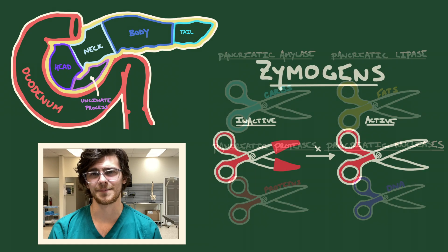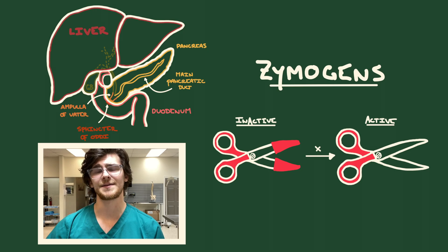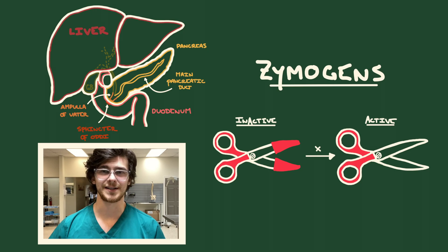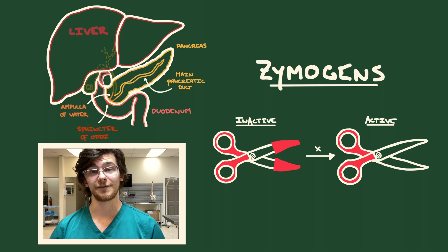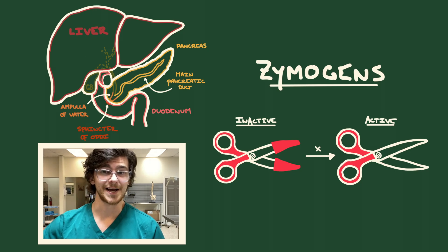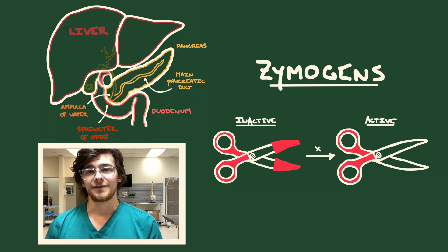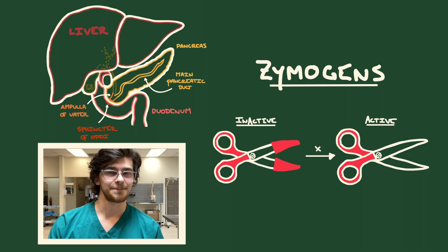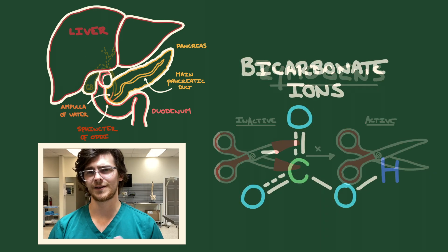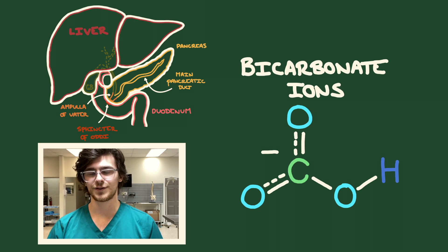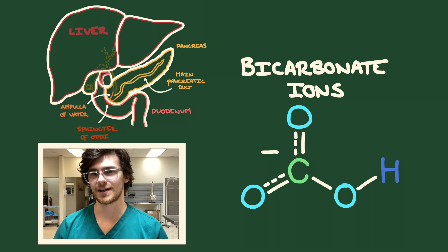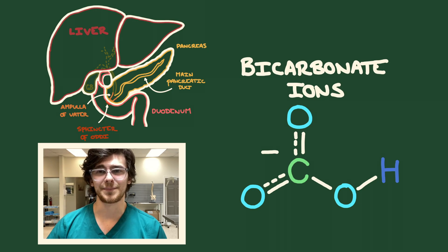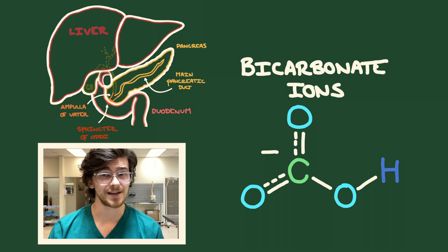Like pepsinogen in the stomach, the protein-cleaving enzymes of the pancreas are released in their inactive form, ensuring they don't break down any cells of the organ itself and only break down the proteins of our diet. Molecules that require activation to perform their function are called zymogens. The pancreas also secretes bicarbonate ions, which serve to neutralize the acidic conditions that the stomach delivers into the duodenum, as the duodenum isn't built for that acidic environment.